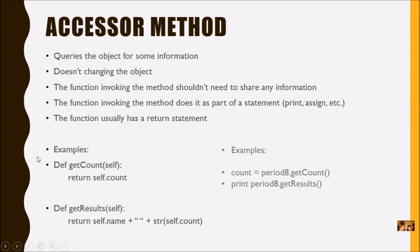Here's an example of an accessor method — it has a return statement. Notice how it's not doing any math or work; it's simply returning a value to the function. Here's an example of invoking these methods: one is part of an assignment statement, one is part of a print statement. It can't stand alone because it's returning a value, and that returned value has to go somewhere.